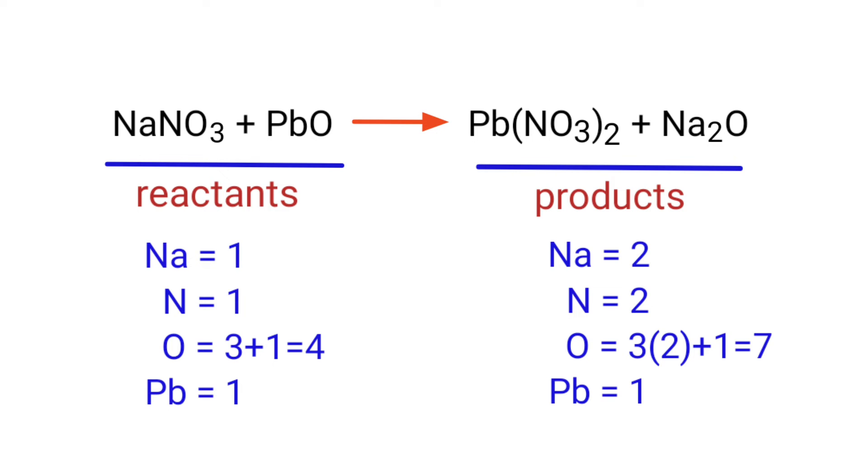In this equation we need to balance the sodium atoms first. To do this we need to put a coefficient of 2 in front of NaNO3.